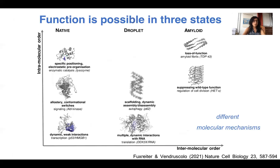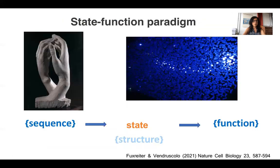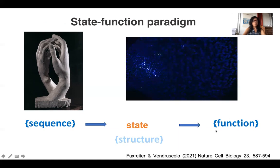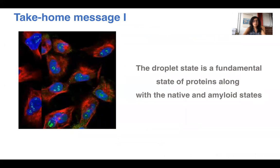Biological functions are possible in all three states, but through very different molecular mechanisms. While in the native state, folding creates distinguished microenvironments that enable specific recognition or different kinds of chemical processes, in the condensed state this kind of distinguished microenvironment is erased, and functional effects are mostly consequences of local concentration changes. So when we think about protein functions in a cell, we need to consider the relationship between states and function — replacing the classical structure-function paradigm with a state-function paradigm. The droplet state of proteins is a fundamental state, along with the native and amyloid state, and under physiological conditions all three states can be explored.